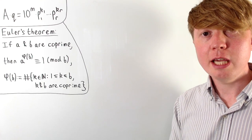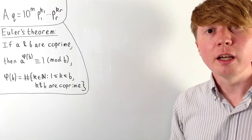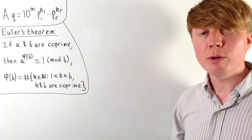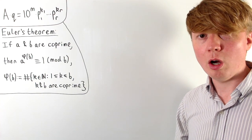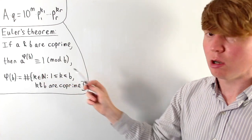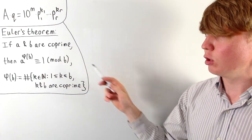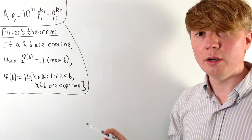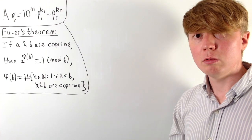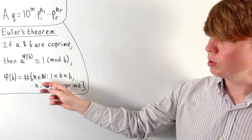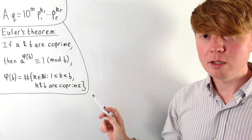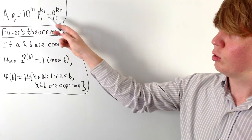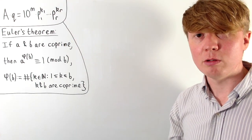We won't prove Euler's theorem, but we'll digest exactly what it's telling us and how it will be useful. Euler's theorem tells us that if you have two integers which are co-prime — they don't have any common factors other than 1 — then A raised to a certain power is always going to be equivalent to 1 modulo B. You can think of this as being a multiple of B plus 1. That power is essentially the number of integers less than or equal to B which are co-prime with B. For our purposes, we just want to have all of these prime factors expressed as a power of 10 minus 1, so we don't actually care what that power of 10 is.